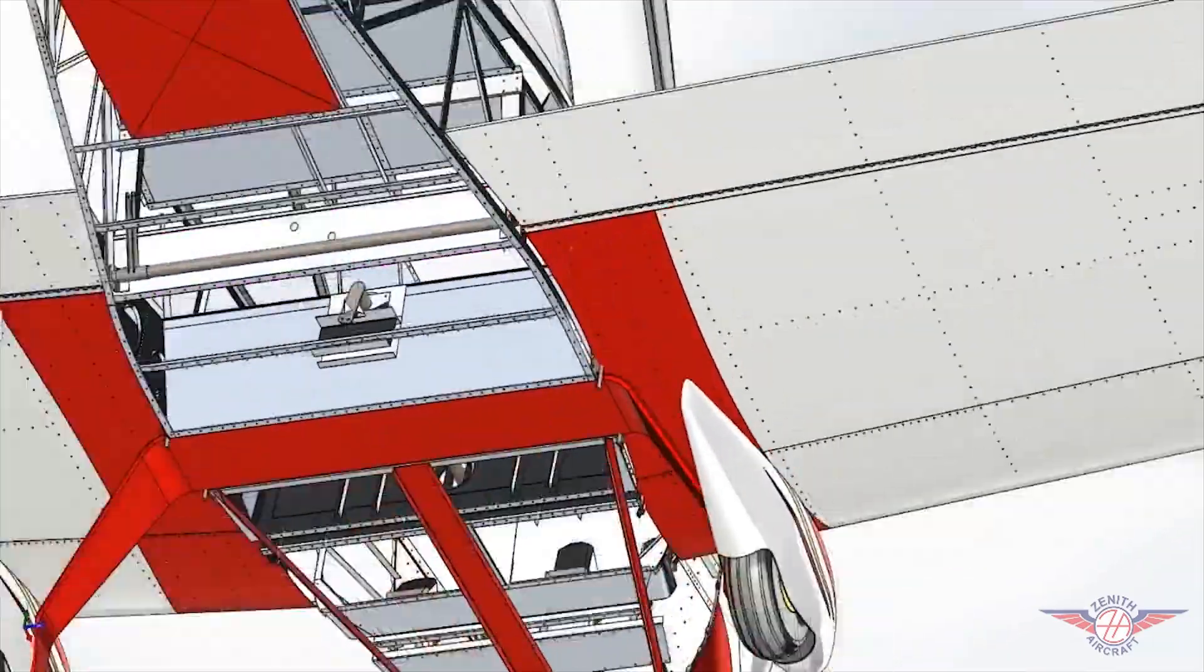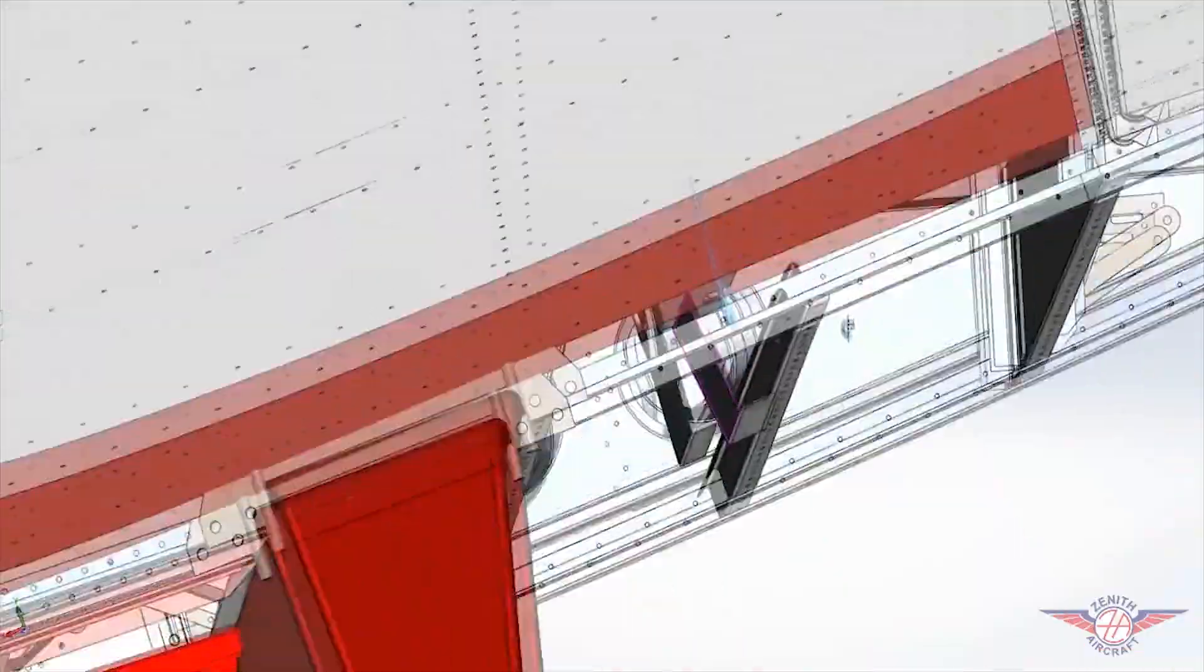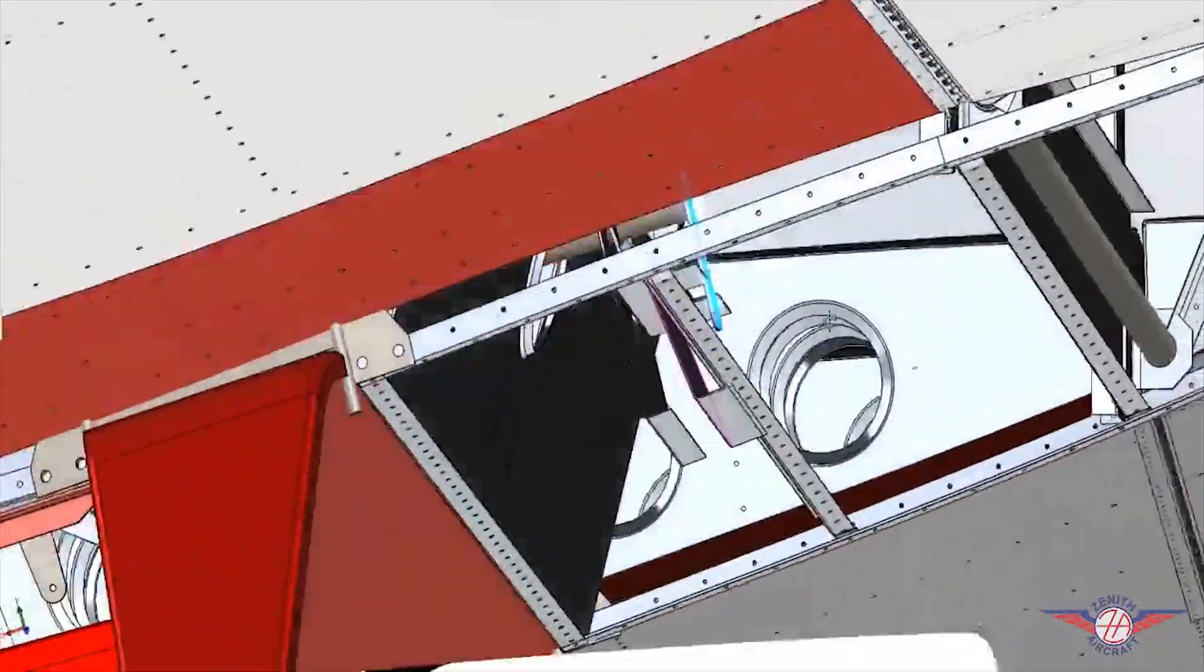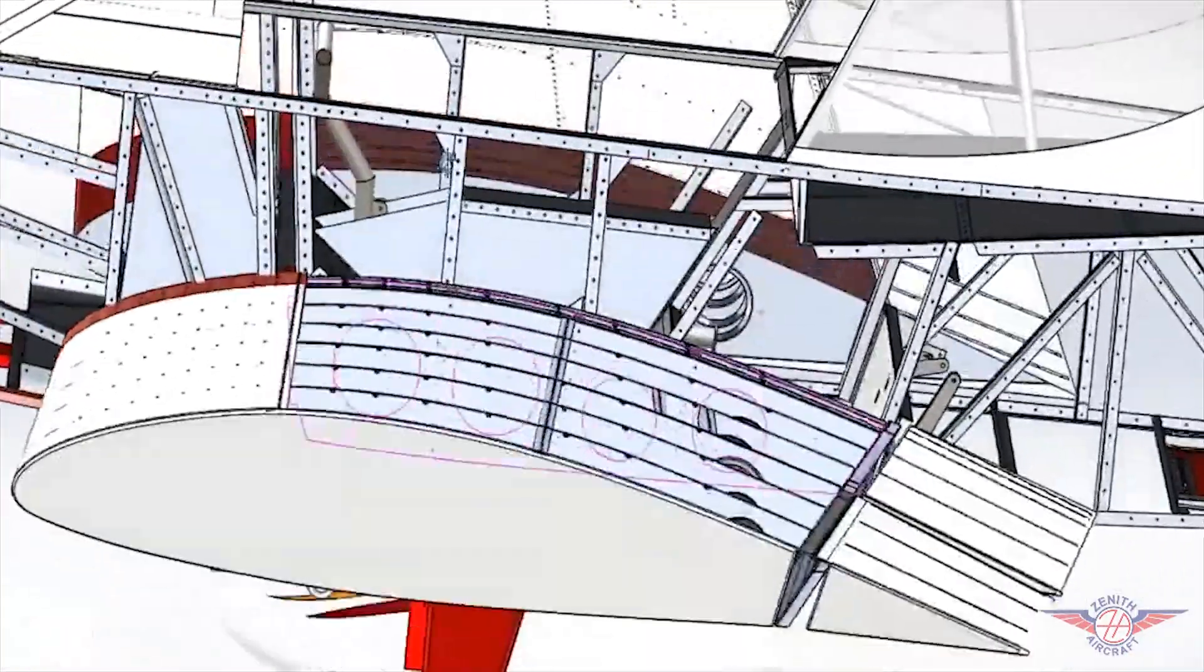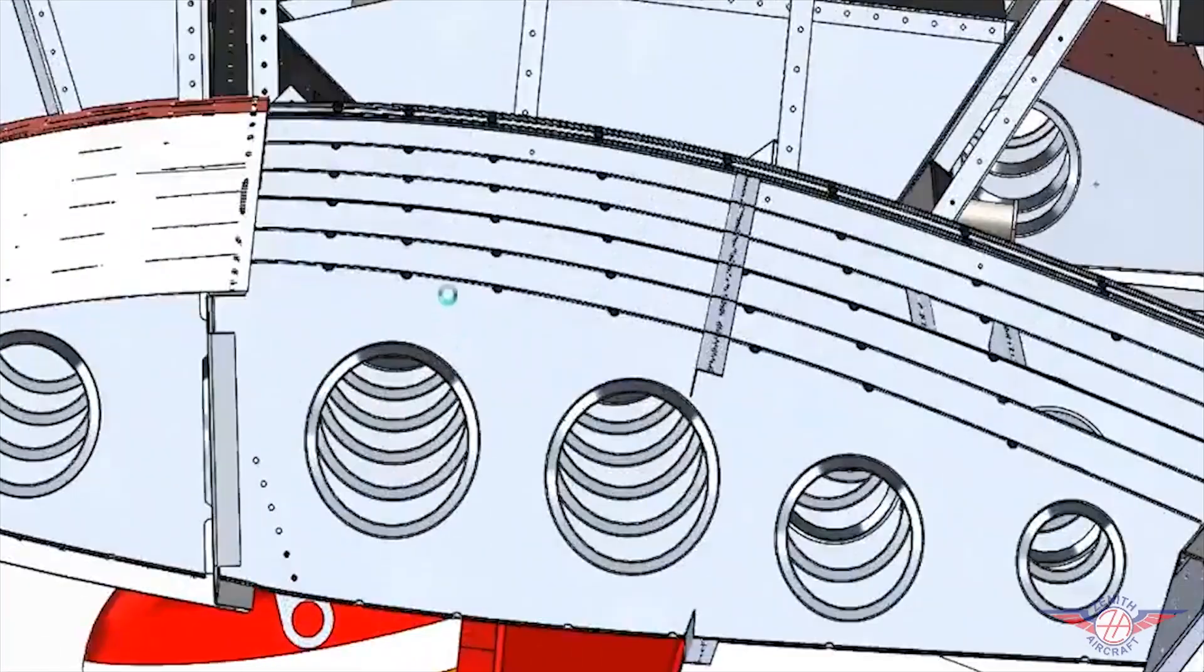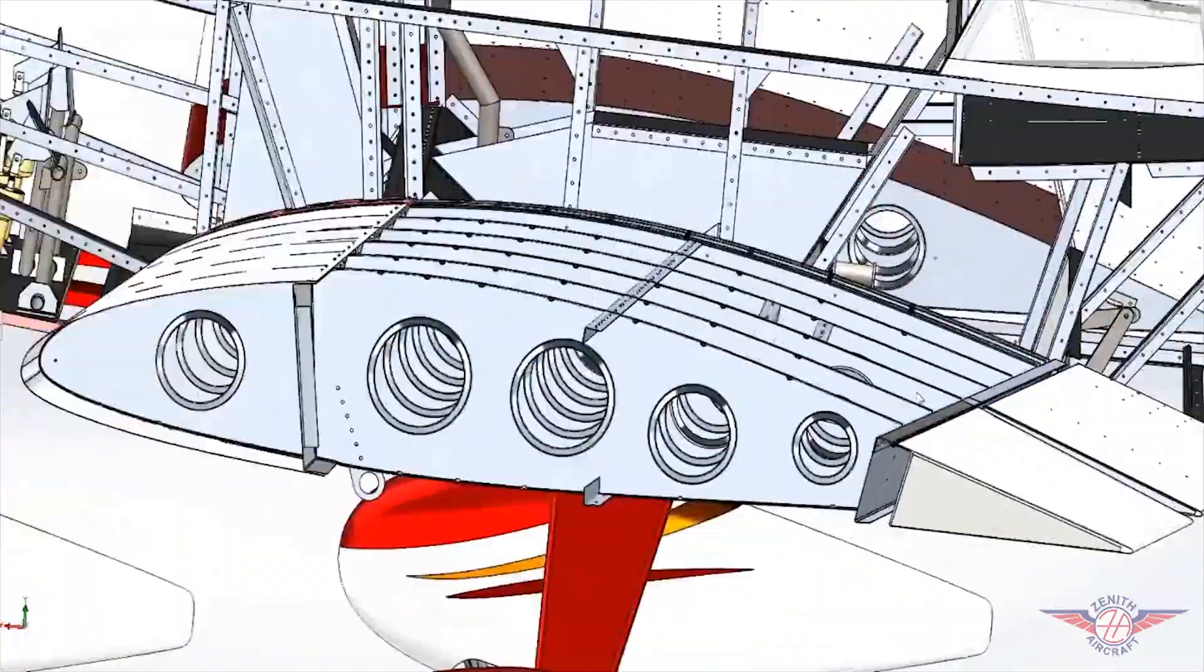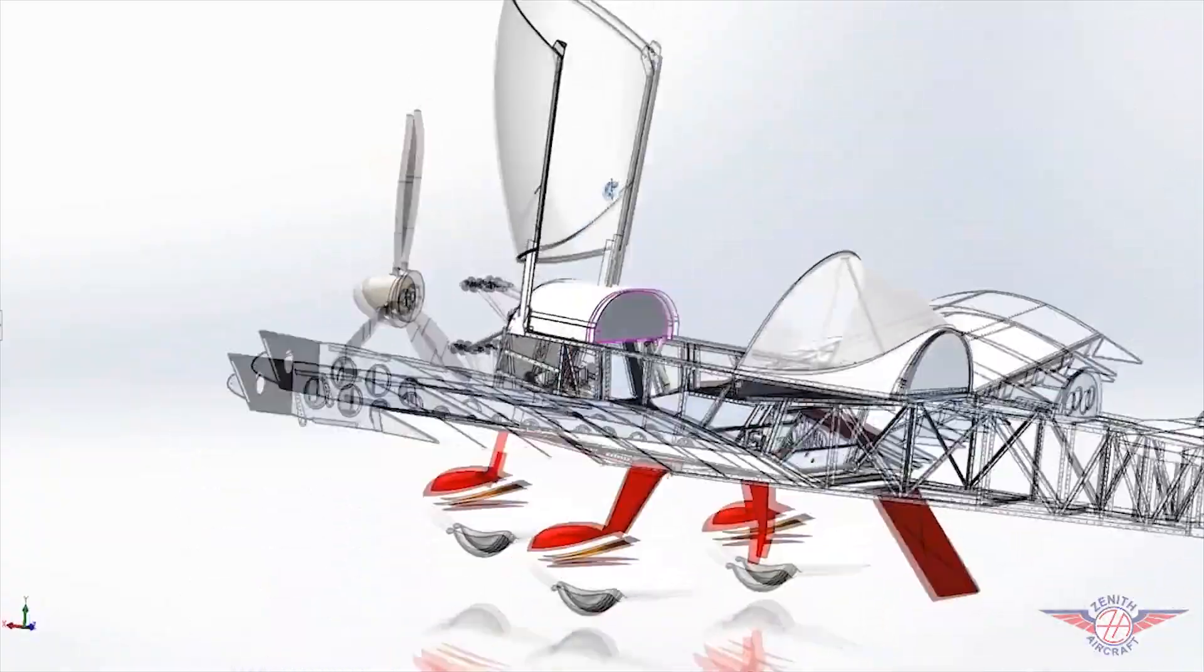Key features of the Zenith CH-650 kit include matched-hole technology—the pre-drilled holes ensure perfect alignment, simplifying the assembly process. All-metal construction provides durable and lightweight aluminum alloy construction with excellent longevity and ease of construction.